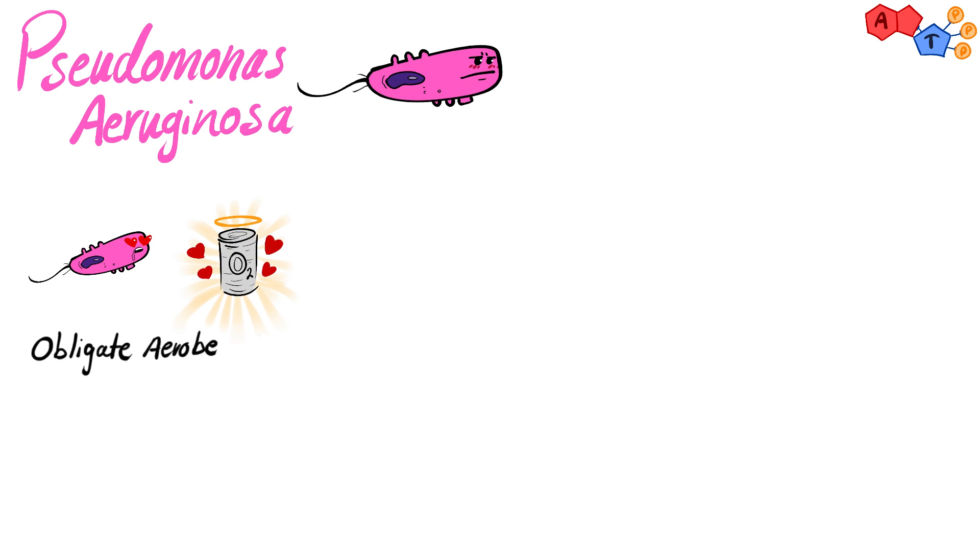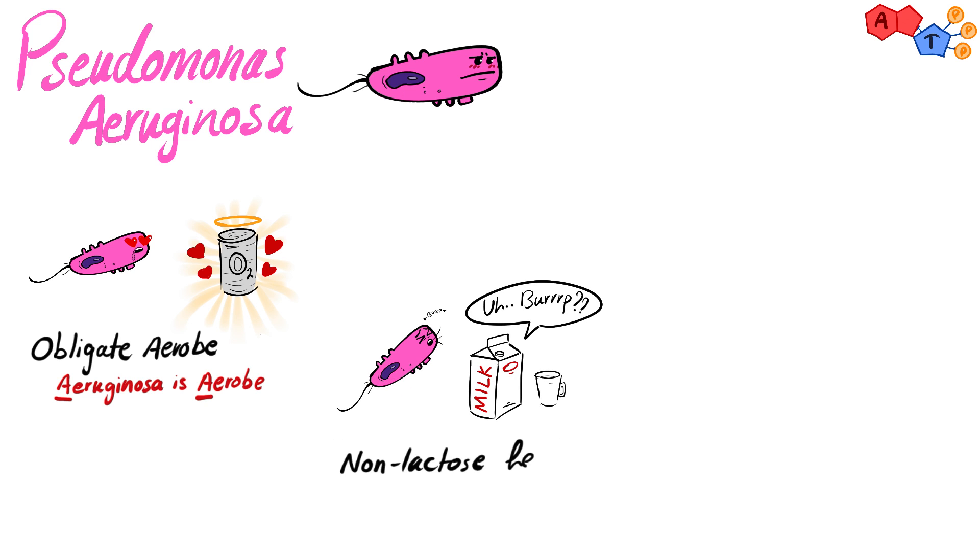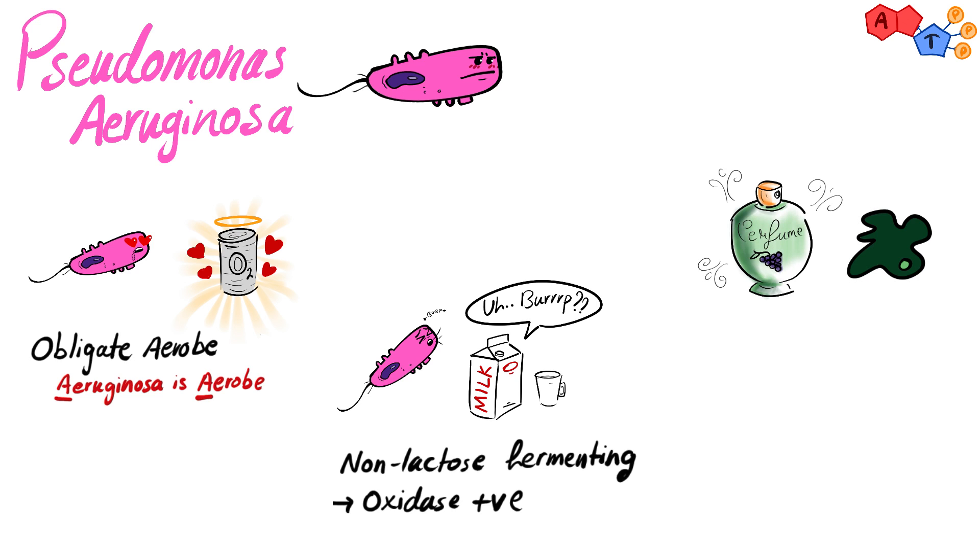He's an obligate aerob and a cool mnemonic to remember this is aeruginosa is aerobic. He's also non-lactose fermenting but is positive for oxidase and this is particularly important for lab interpretation. And on culture, he has the scent of grapes.